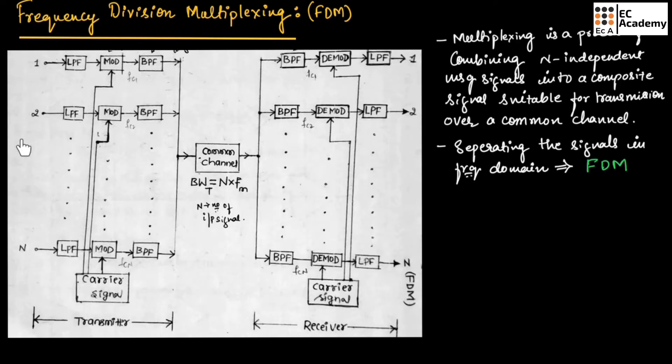N number of incoming signals are modulated by mutually exclusive carrier signals that are supplied from a carrier source at each modulator. Then, the modulated signal is passed through band pass filter to produce SSB signal, which is single sideband signal. These signals are separated in frequency and they are combined into a composite signal, and this process is known as frequency division multiplexing.